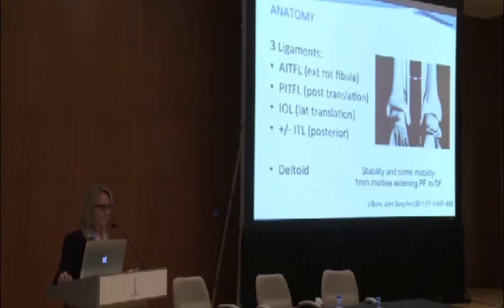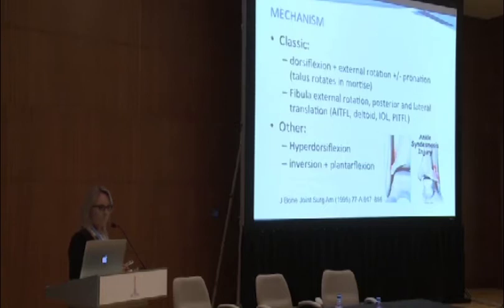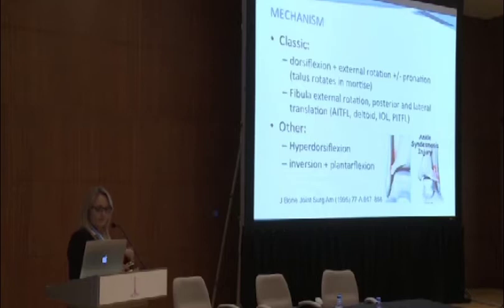The classic mechanism described for syndesmosis injuries is the dorsiflexed foot which then externally rotates with or without a degree of pronation. Basically, the talus moves inside the mortise and takes the fibula with it, causing external rotation, then posterior and then lateral translation of the fibula, and then rupture of the ligaments.